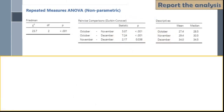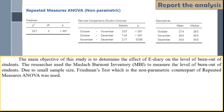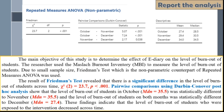This analysis report follows the APA format. Take note of the terms in blue font and the format of reporting values in red font. The main objective of this study is to determine the effect of e-diary on the level of burnout of students. The researcher used the Maslach Burnout Inventory or the MBI to measure the level of burnout. Due to small sample size, Friedman's test, which is the non-parametric counterpart of repeated measures ANOVA, was used. The result revealed that there is a significant difference in the level of burnout of students across time, represented by the given values.